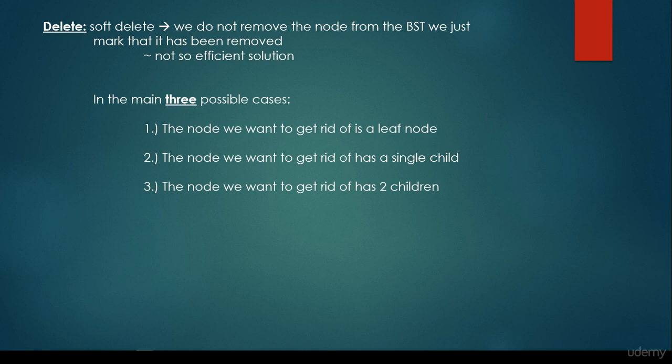In the main, there are three possible cases. The node we want to get rid of is a leaf node. Or the node we want to get rid of has a single child. Or the node we want to get rid of has two children.